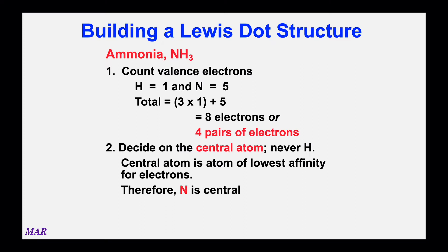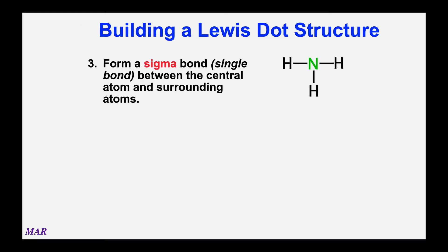A fancier way to describe the central atom is that it's the atom of lowest electron affinity — it's least into electrons. For all these reasons, nitrogen is going to be the central atom. Once we know what's in the middle, we connect the outer atoms to the inner atom with a bonding pair — a sigma bond, which in this case is a single bond. Those lines between N and the H's each represent a pair of electrons.